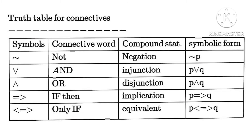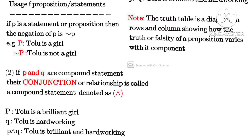Now here is the truth table I promised. We have the truth table for connectives. You can see we have: not, and, or, if-then, and if-and-only-if. So we have negation, equivalence, and you should know the other names by which they are called. Take note of these — they are very important. Let's quickly check the usage of propositions or statements.